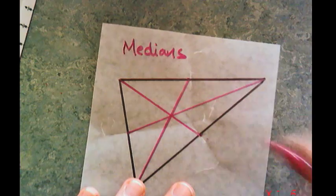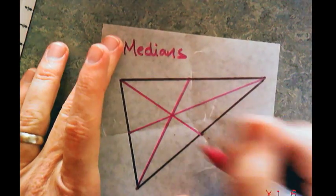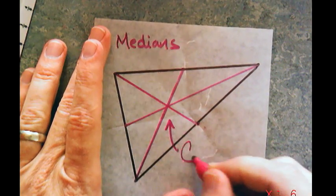Now this one is made with medians. It's got a special name. This is another point of concurrency. The name of this one is the best name. This is called the centroid.